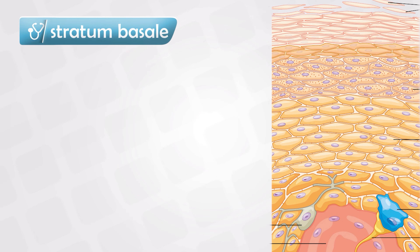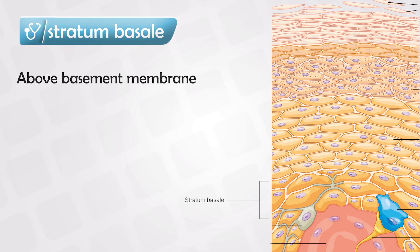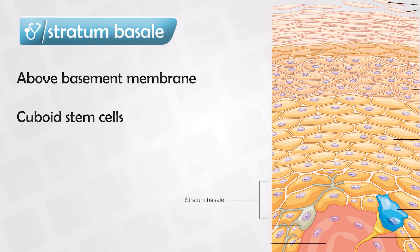The lowermost layer is the stratum basalis. This layer is formed by stem cells lying over a basement membrane. This basement membrane basically separates the epidermis from the dermis. The stem cells themselves are cuboidal and constantly dividing — they form all the upper layers.